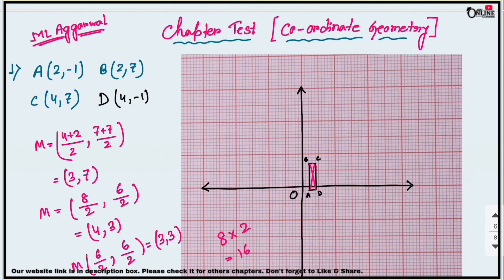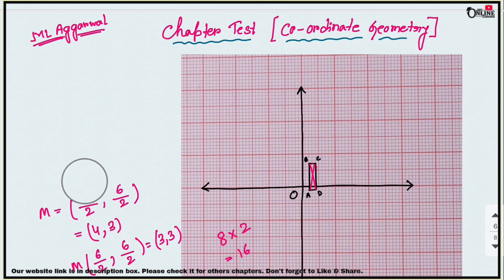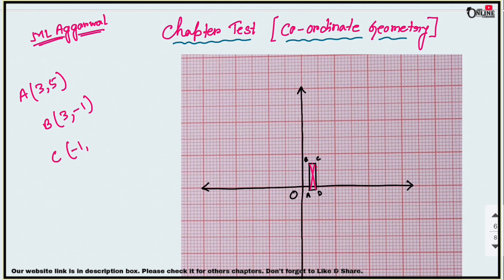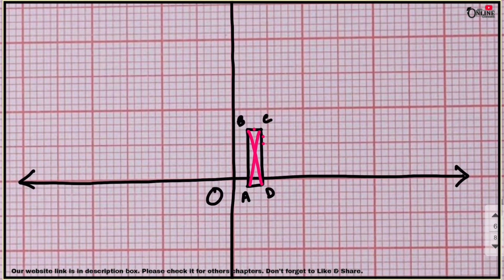Now question number 2: three vertices of a parallelogram are A(3, 5), B(3, -1), and C(-1, -3). Plot these points on the graph paper and hence use it to find the coordinate of the fourth vertex.